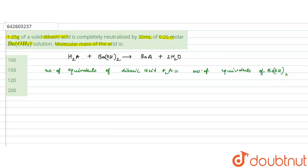Number of equivalents are equal to the number of moles into n factor. This is for H₂A and equals to number of... and these number of equivalents can be calculated by the concentration into volume into n factor.